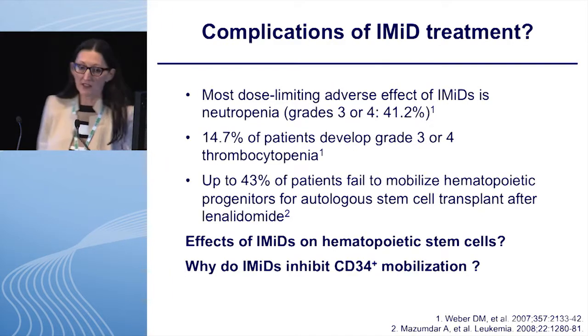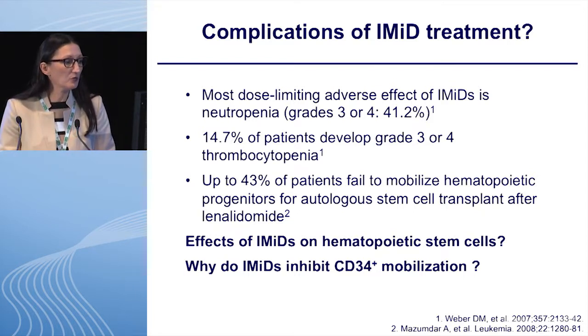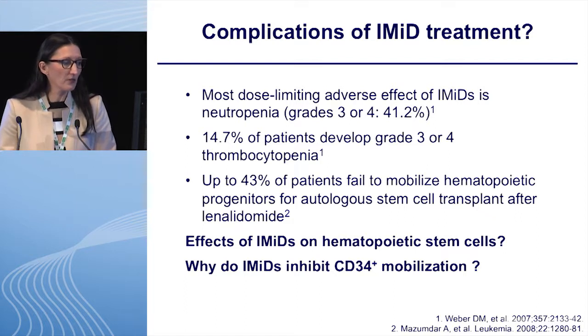Most of you are aware that the most limiting adverse effect of IMIDs — that means lenalidomide and pomalidomide — is neutropenia. In refractory relapsed myeloma patients, up to 40% of the patients develop grade 3 or 4 neutropenia. Up to 15% develop grade 3 or 4 thrombocytopenia, and it really inhibits our ability to use those drugs. We also have reports that up to 43% of patients fail to mobilize hematopoietic progenitors after long-term treatment with lenalidomide.